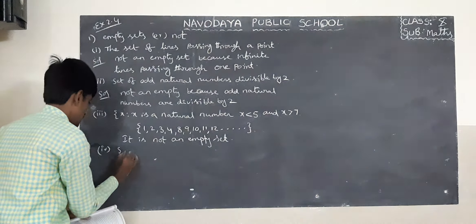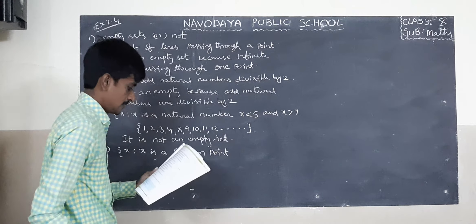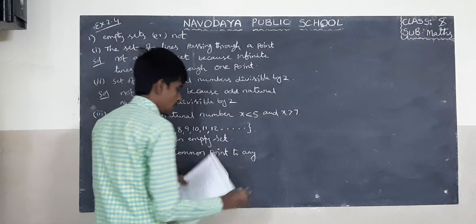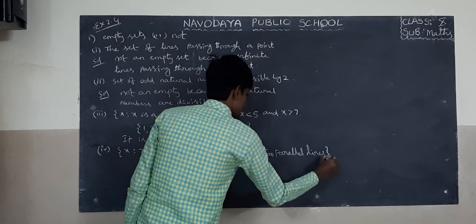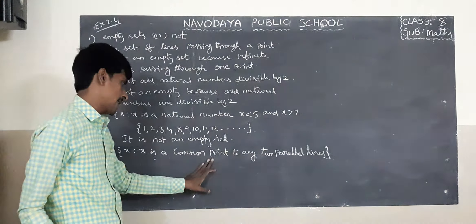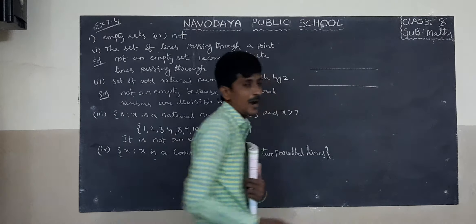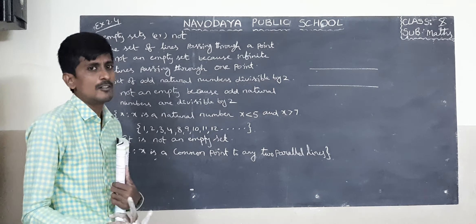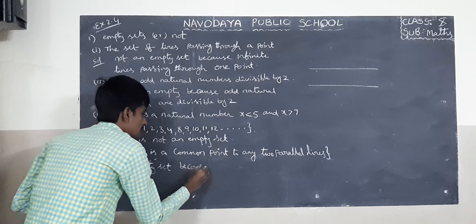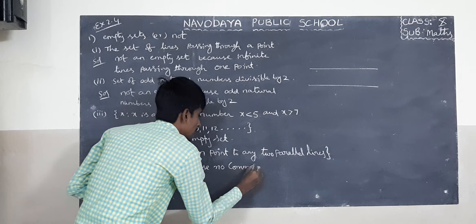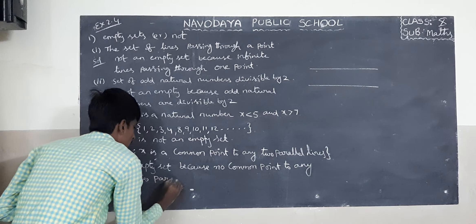Fourth one: x is a common point to any two parallel lines. There is no common point, because parallel lines do not intersect at any point. So it is an empty set because there is no common point to any two parallel lines.